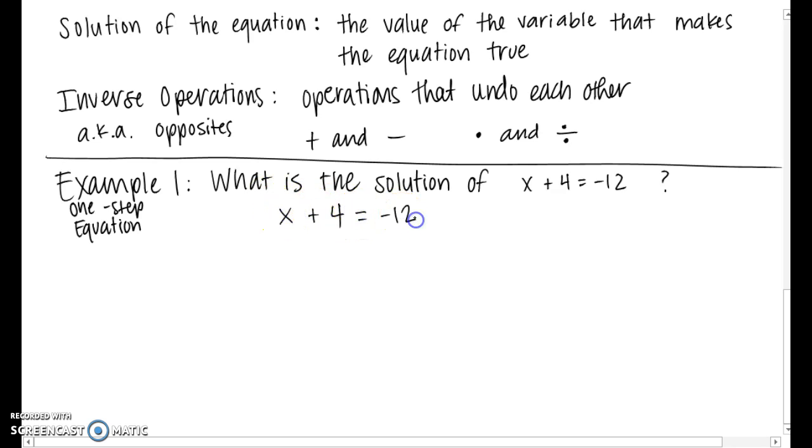In this case, we only need one. So what you want to do is look for the variable x. See how there's a plus 4 next to it? You want to do the opposite of addition, so we're going to subtract 4 from both sides. That gives us x equals negative 16, and that's the solution. It was very quick.